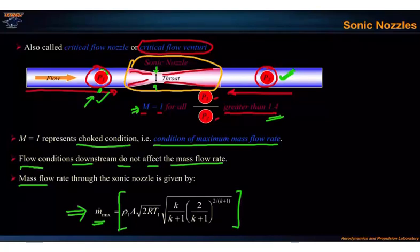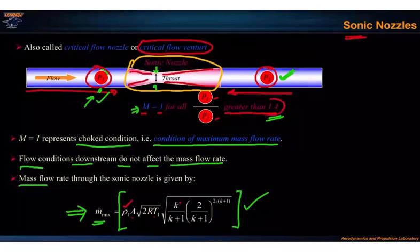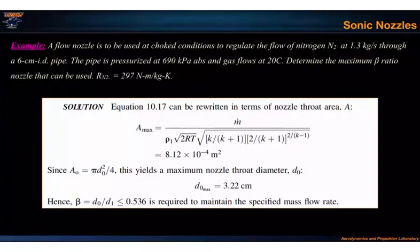The maximum mass flow rate expression includes ρ1, the upstream density; A, the cross-sectional area; T, the upstream temperature; and k, the specific heat ratio. Knowing all these parameters allows us to calculate the maximum mass flow rate through the piping section. The name 'sonic nozzle' arises from the fact that when p1 over p2 exceeds 1.4, we reach the M equal to one, or sonic, condition at the throat.